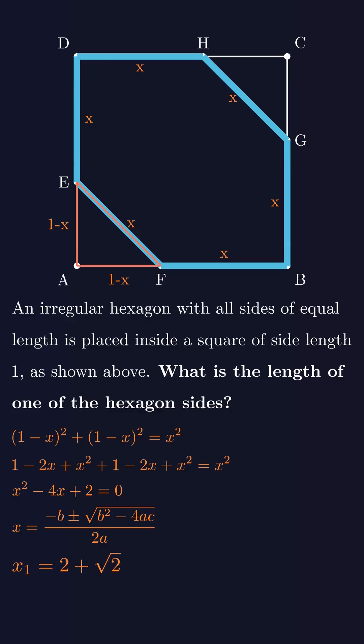2 + √2 and 2 - √2. Now, which one is the correct answer? It can't be 2 + √2, because one side of the square is just 1 unit long, so x can't be greater than 1. That means the correct answer is 2 - √2.